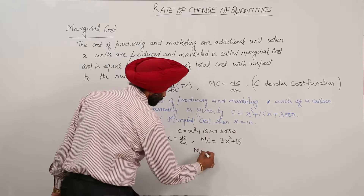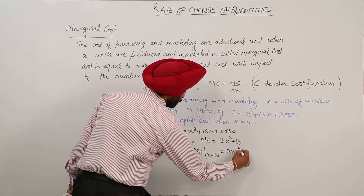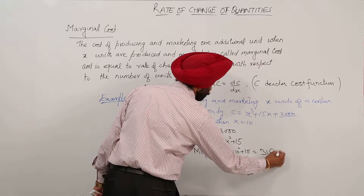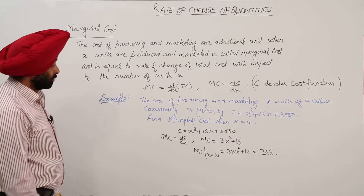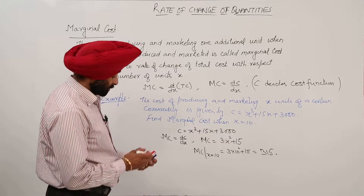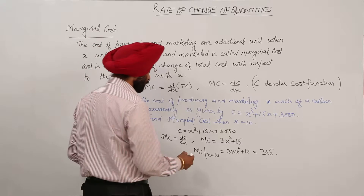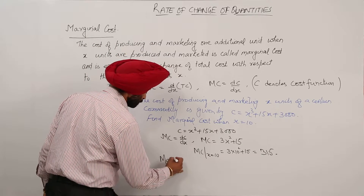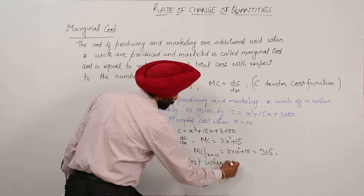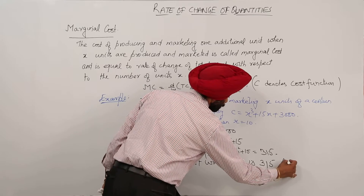Marginal cost at x is equal to 10 is equal to 3 into 10 squared plus 15, which is equal to 315. The cost of producing and marketing x units is given by C equals x cube plus 15x plus 3000. Find marginal cost when x equals 10. Marginal cost when x is equal to 10 is 315, and this is your answer.